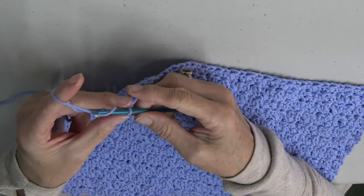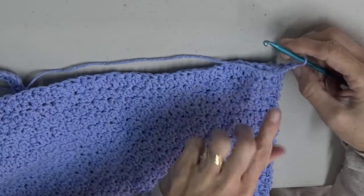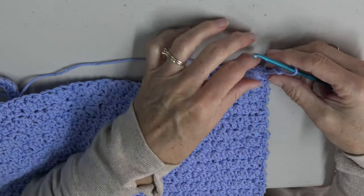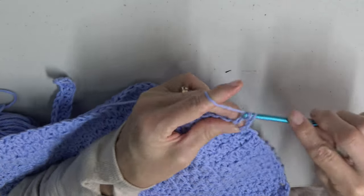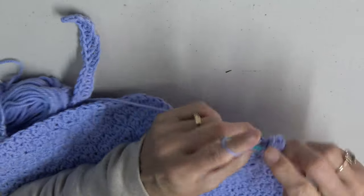So to start your border, you are at the end of your row that you just completed and you're going to go back the other direction. So you're going to start by chaining two and then you're going to turn your project and return going back the other direction.